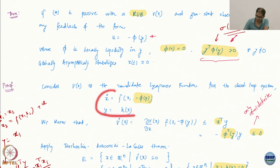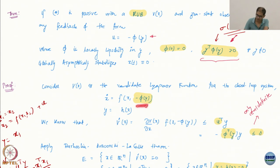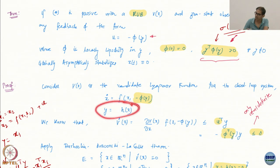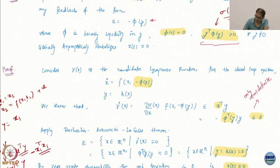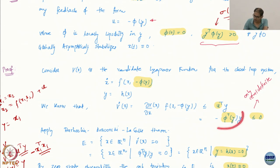The system now becomes the closed-loop form because I have plugged in my feedback: instead of control u, I have minus φ(y), and the output is just h(x). What do we know about V(x)? By the passivity property, the partial of V with respect to x multiplied by the dynamics is less than or equal to u^T y. And since u is just minus φ(y), I plug this in.